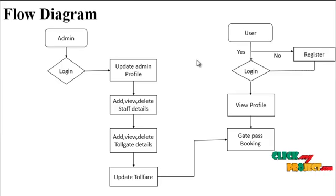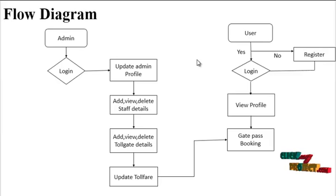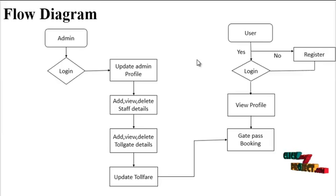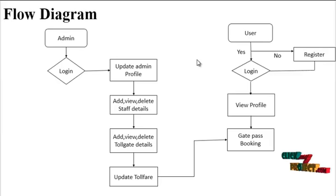Let's see the user side. The user initially logs in with their own username and password. Users can view their profile through authentication with username and password. Users can also perform gate pass booking, which is the main module. More than one user can get a gate pass through this module. The gate pass contains username, vehicle category, vehicle number, location, time, area, date, and Tollfare details.